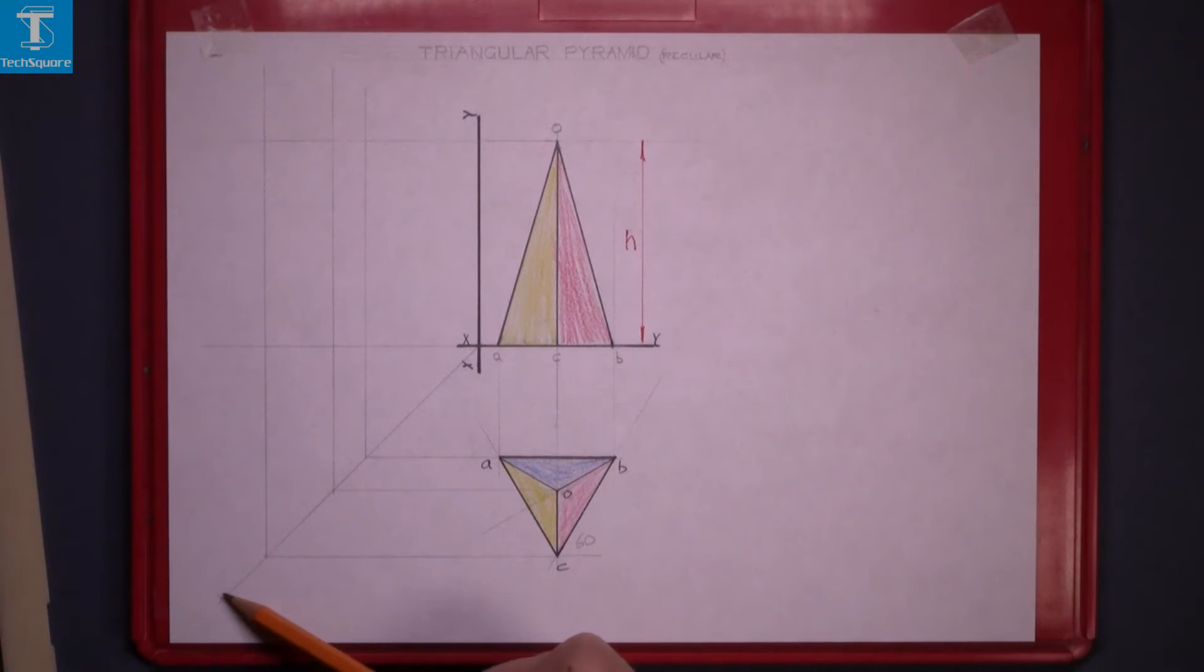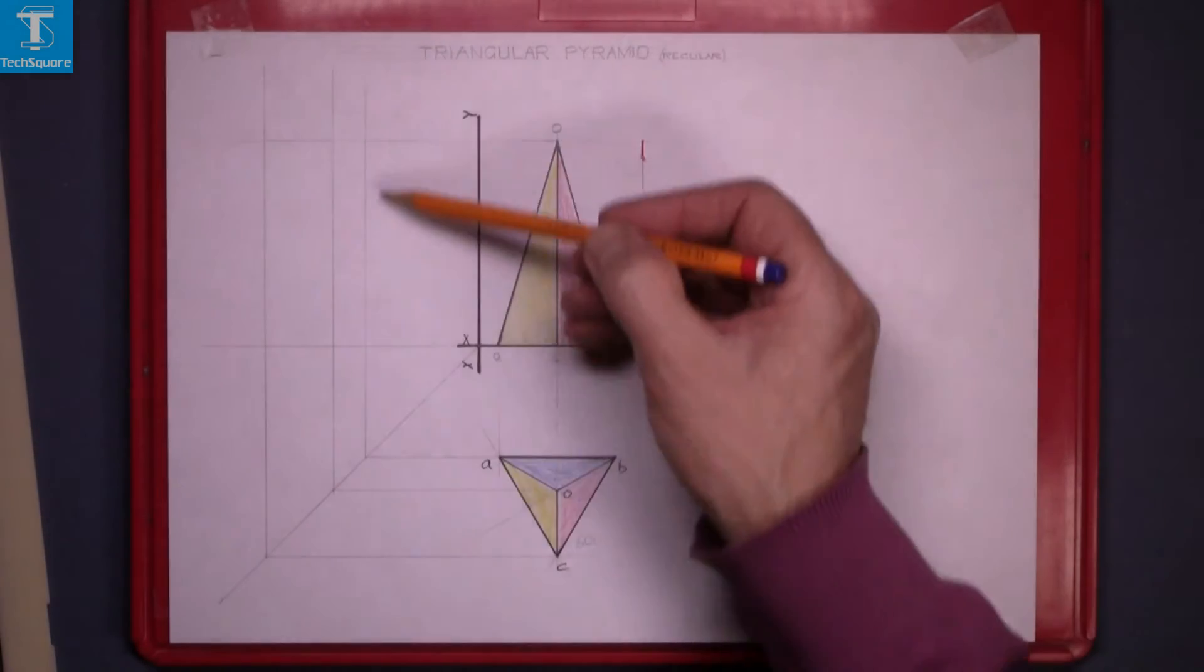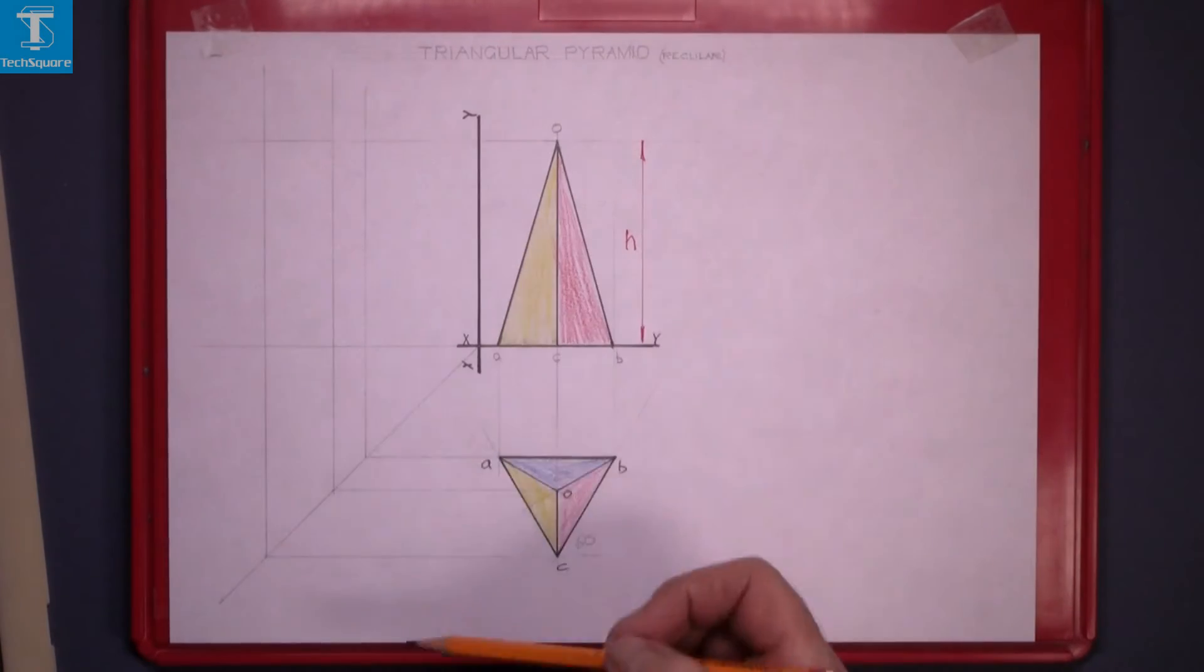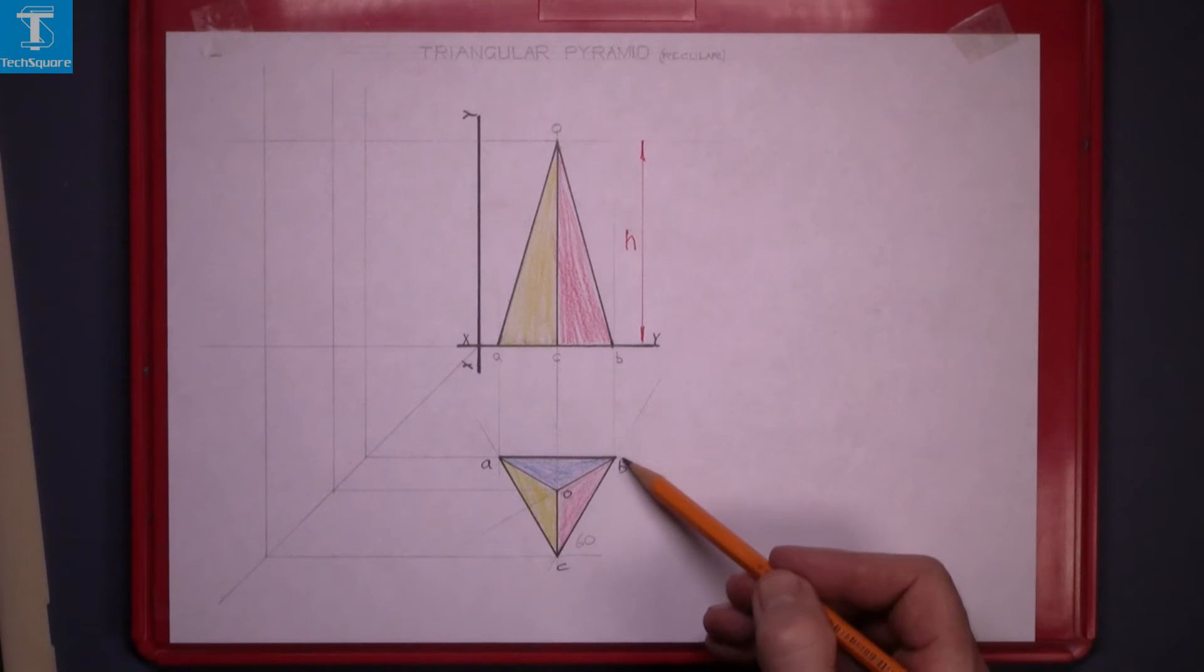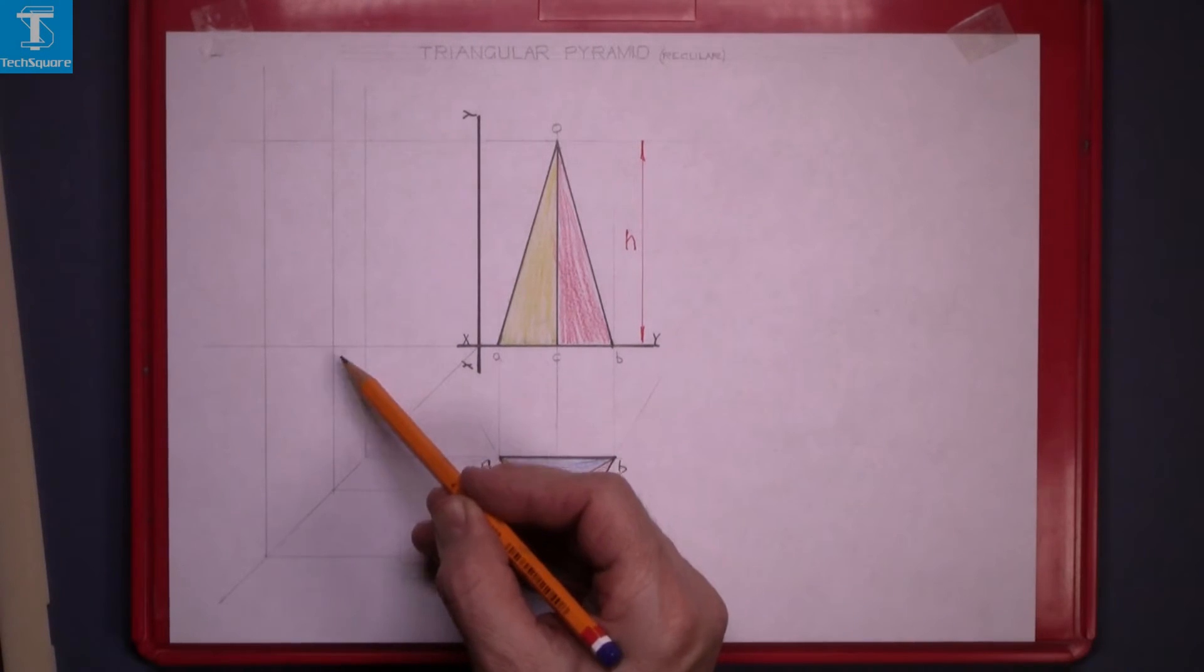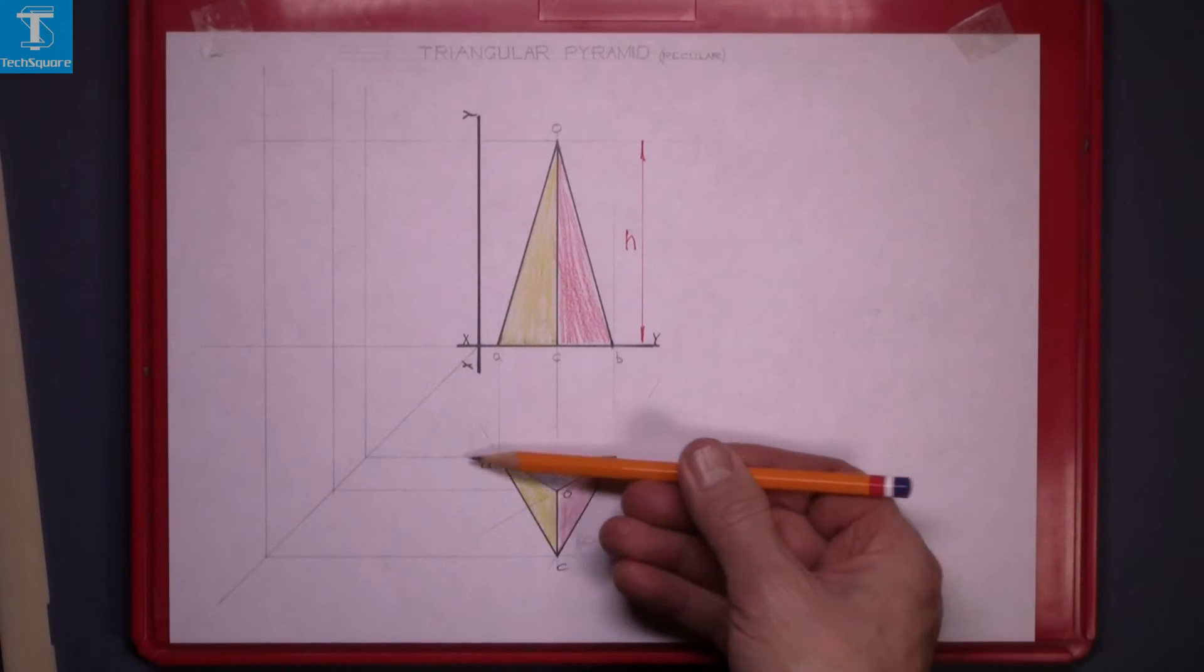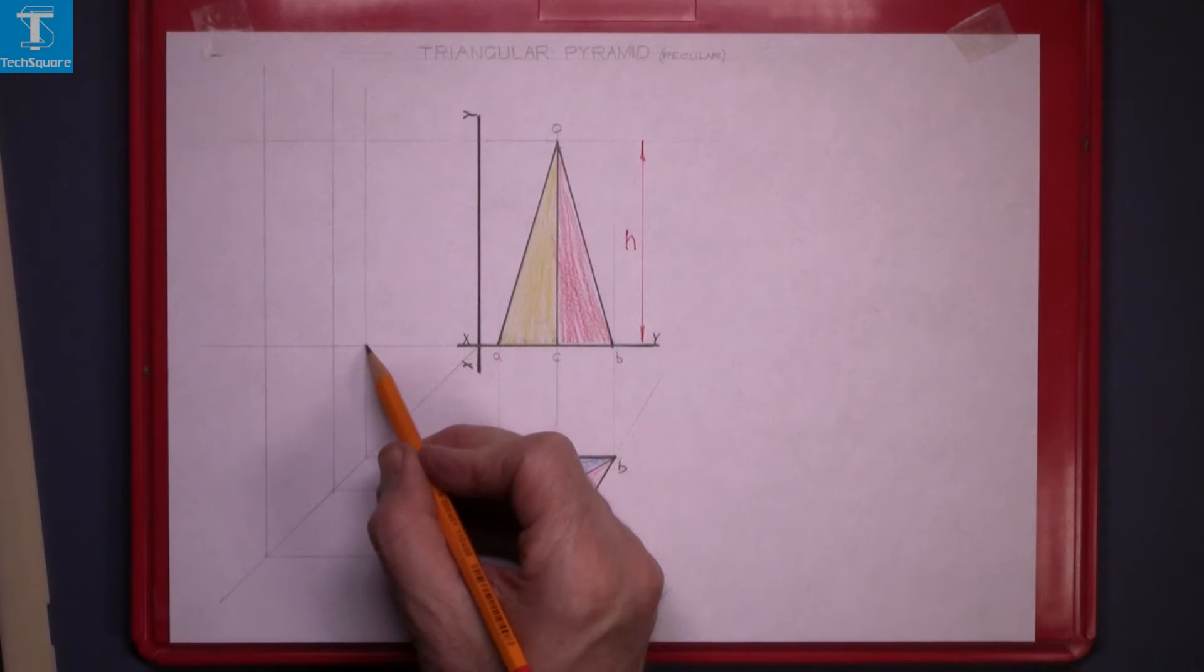Draw a line at 45 degrees. Bring the points across to intersect with the 45 degree line and then draw vertically up. So point B, A is on this line. So B, A is this point here.